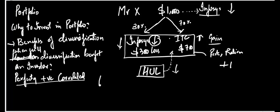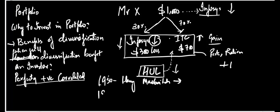An important historical note is that portfolio management began in 1950 when Harry Markowitz gave the theory of portfolio management. It was later further developed during the 1960s by Sharpe. This concept is today known as modern portfolio management and will be discussed in future classes. In summary, portfolio investment is beneficial only when the stocks are not perfectly correlated with each other; if they are perfectly correlated, the benefits of diversification may not arise.